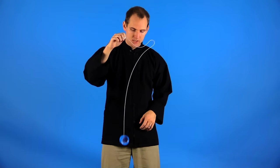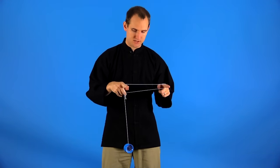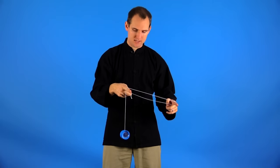From here, you're going to whip the string underneath the yoyo and it forms a loop. You want to take both of your index fingers and get them underneath the string like this.